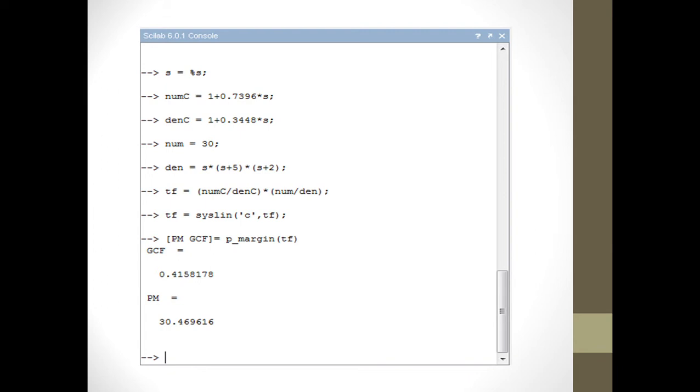Next, based on the value we will calculate the transfer function. For that, we will substitute alpha and tau value in the numerator C for 1 plus 0.7396 S and denominator C 1 plus 0.3448 S. And then, the numerator is 30. After that, the denominator is still the same. Then, we will get the gain crossover frequency 0.4158 and the phase margin 30.5. Thank you.